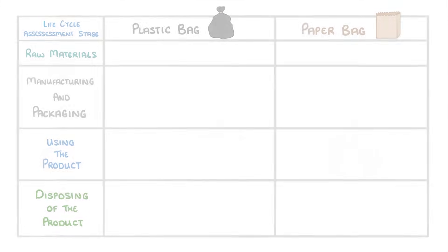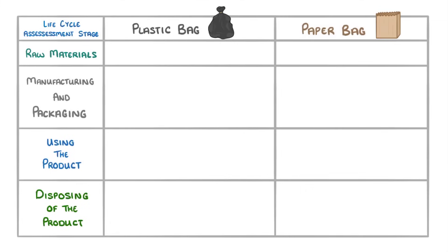Now that we have an idea of the different stages, let's compare plastic bags to paper bags. The raw material for a plastic bag is crude oil, which is a finite resource and has to be separated using fractional distillation. On the other hand, paper bags are made of wood from trees, which reduces the habitats available for animals and plants.